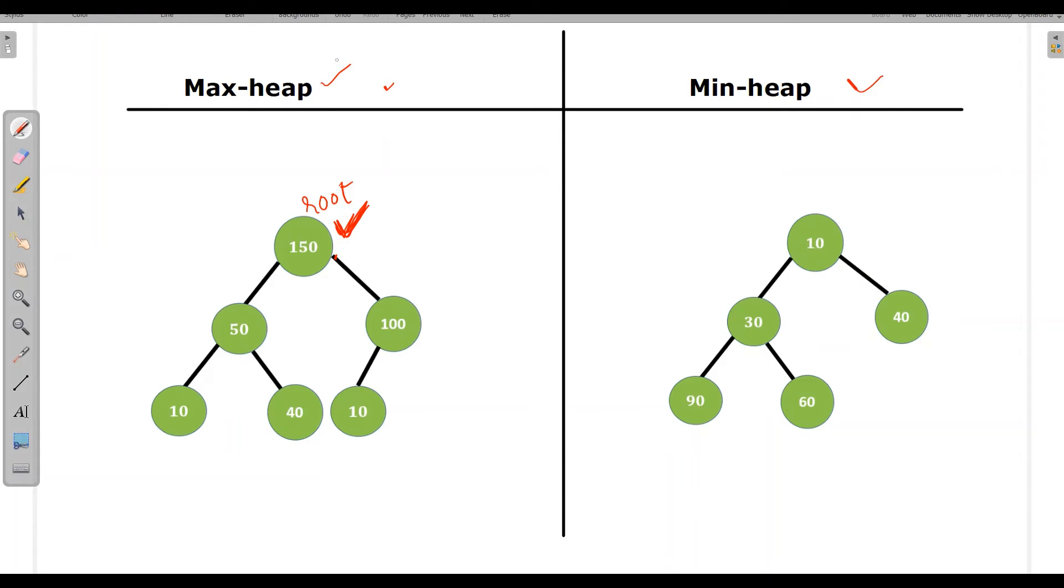But coming to min heap, min heap is a complete binary tree or almost binary tree in which root is minimum. Similarly, we will check 10. Among all the nodes, 10 should be the minimum value among 30, 40, 90 and 60. That's what it is. When we drop down and we see this subtree, 30 should be minimum as compared to 90 and 60. And when we come to right side subtree, as we don't have value over here, so 40 is the minimum value. So this is what min heap is.